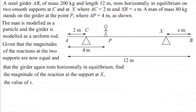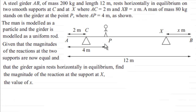Here we have another question on moments. If you haven't done this already, pause the video, give it a try, come back when ready and check your work against my solution. What we've got here is a steel girder AB of mass 200 kilograms and length 12 meters. It rests horizontally in equilibrium on two smooth supports C and X, where AC is 2 meters and the distance X to B is X meters.